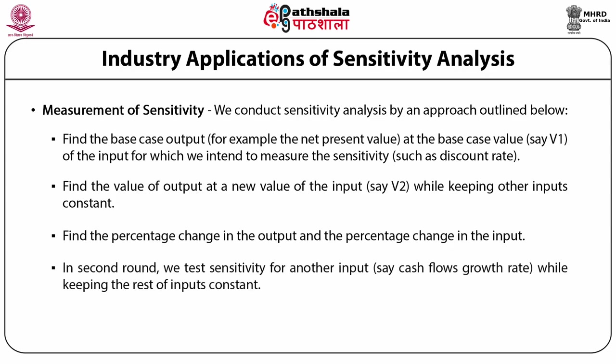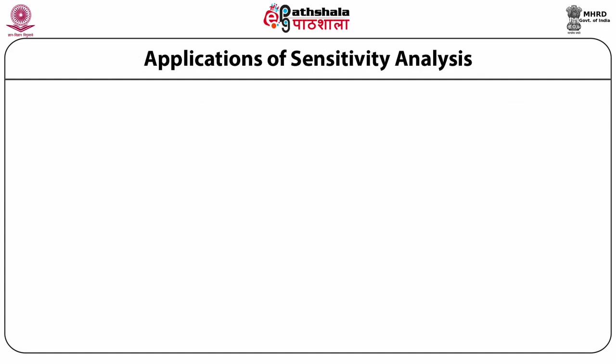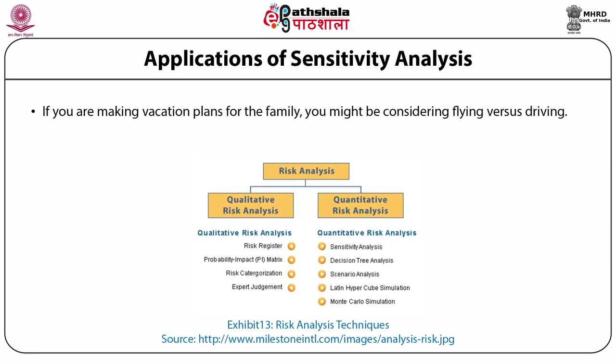In the second round, we test sensitivity for another input, say cash flow growth rate, while keeping the rest of the inputs constant. We carry on this process until we get the sensitivity figure for each of the inputs. The higher the sensitivity figure, the more sensitive is the output to any change in the input, and vice versa. For example, if you are making vacation plans for the family and considering flying versus driving — what if air tickets become more expensive at the last minute, or gasoline prices go up? These factors determine your final decision. Using sensitivity analysis will help you make a much better final decision.